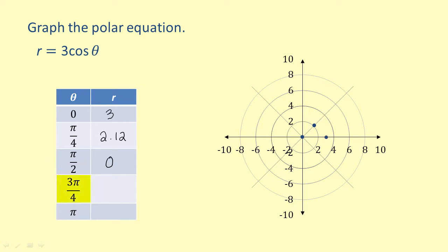Now we have theta equals three pi over four. Three times the cosine of three pi over four is negative three times the square root of two over two, which equals negative two point one two. So we would think our point would be somewhere out here on the line three pi over four. However, since the value is negative, this means we need to be on the opposite side of the pole from this point.